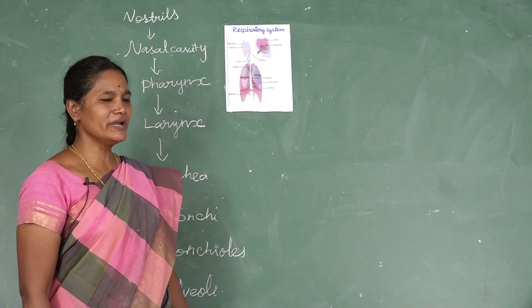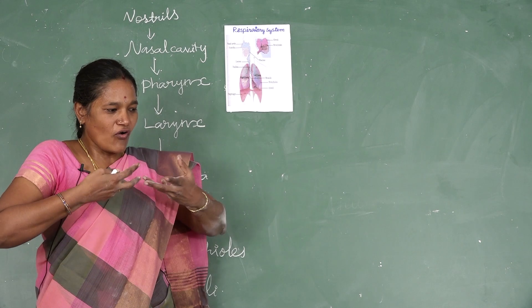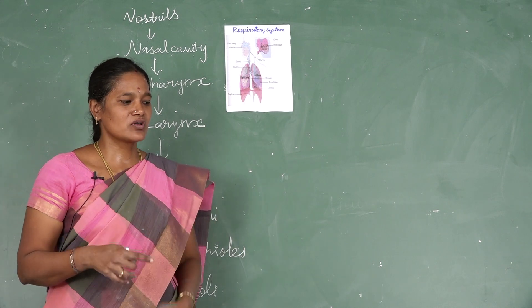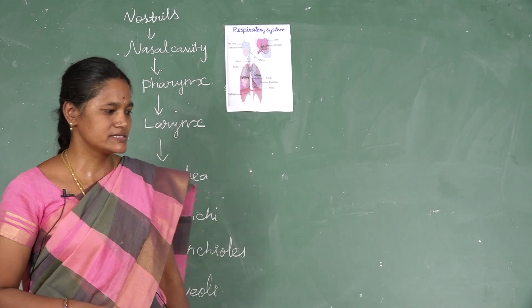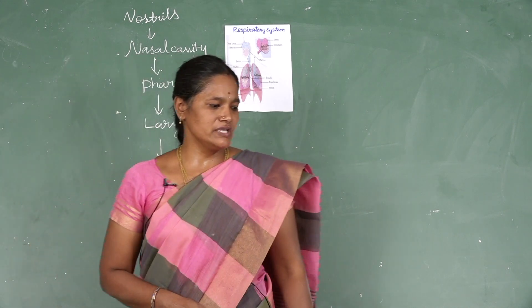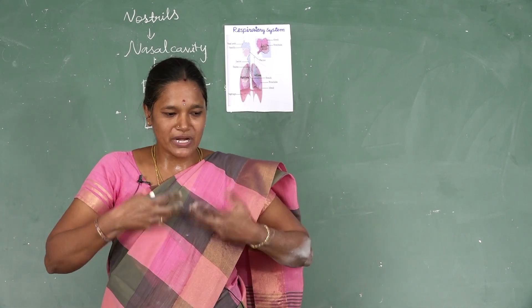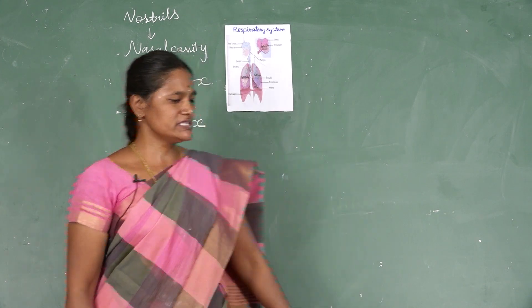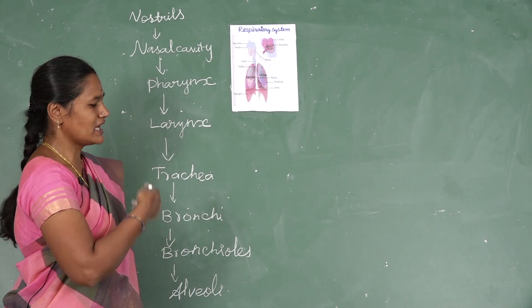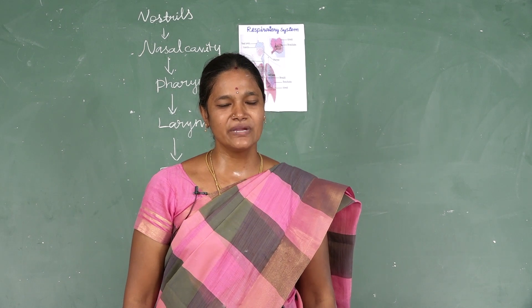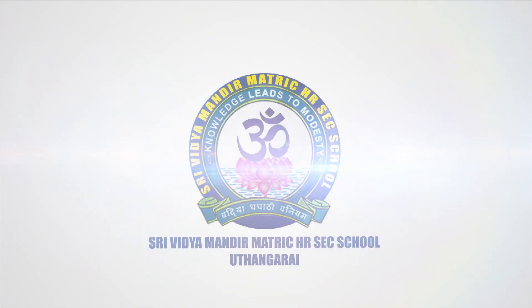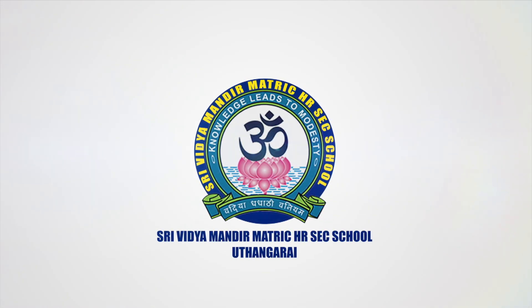How many times do we breathe per minute? We breathe 16 to 18 times per minute. Which organ helps to protect our lungs? Thank you, children. We will meet in the next class.